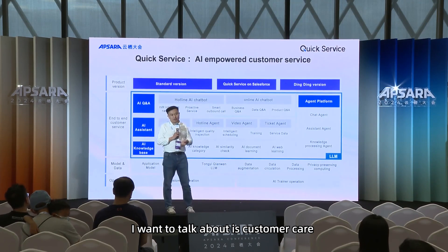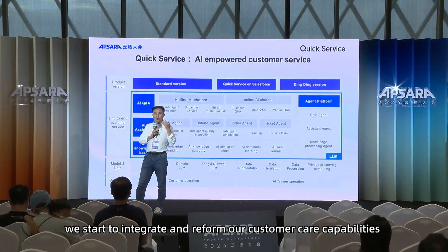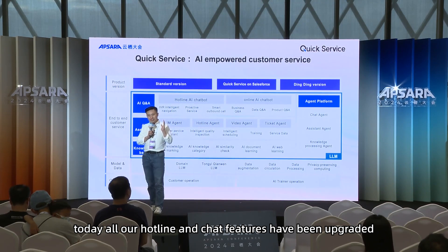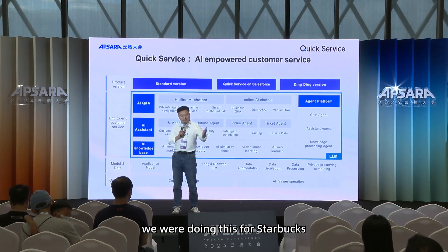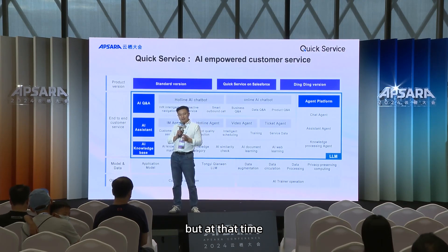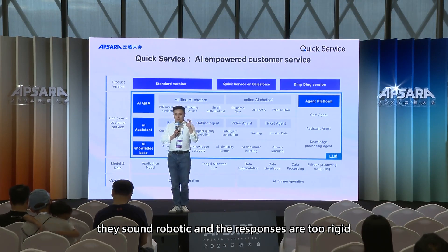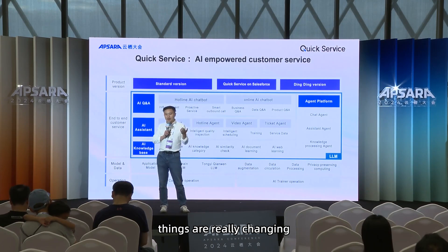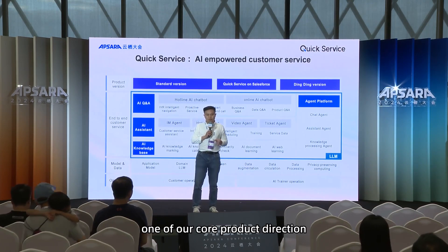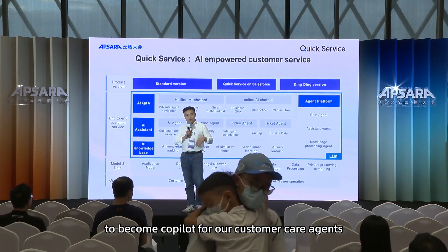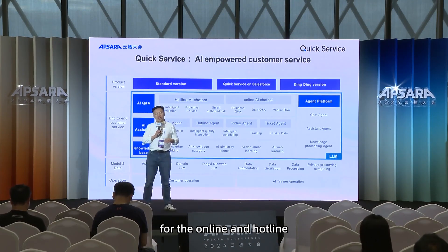The last product is customer care, Quick Service. From last year onwards, with the large language model Tongyi, we started to integrate and reform our customer care capabilities. All our hotline and chat features have been upgraded with Tongyi. Chatbots are nothing new — we were doing this for Starbucks and other big brands five years ago. But those chatbots sounded robotic and their responses were too rigid. With large language models, conversations are now much more natural and intelligent. Our core direction is to use LLM to become a co-pilot for customer care agents and directly interface with customers in chatbot scenarios online and on hotlines.